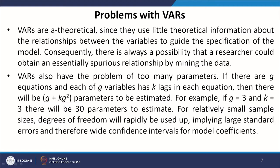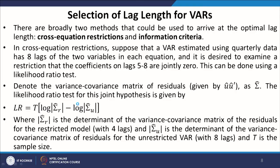VARs also have the problem of too many parameters. If there are g equations and each of g variables has k lags in each equation, then there will be g + kg² parameters to estimate in the entire system. For example, if g = 3 and k = 3, there will be 30 parameters to estimate. For relatively small sample sizes, degrees of freedom will rapidly be used up, implying large standard errors and wide confidence intervals.